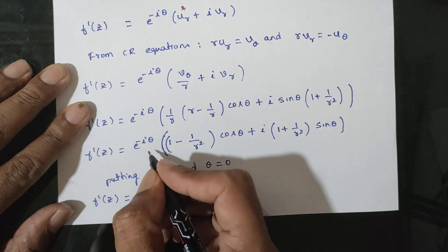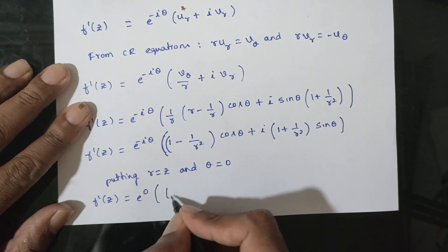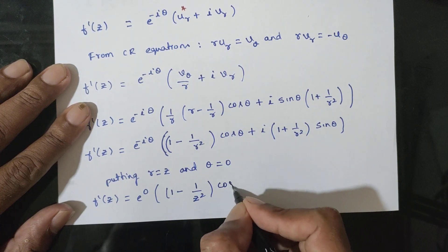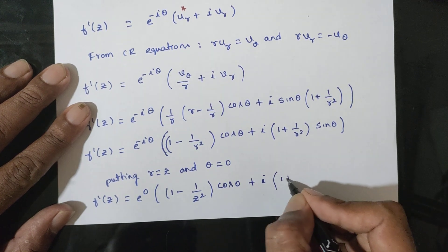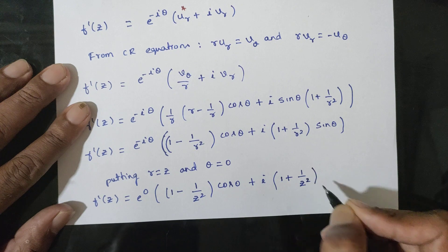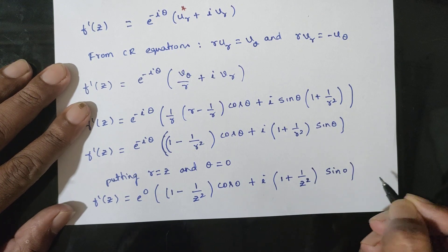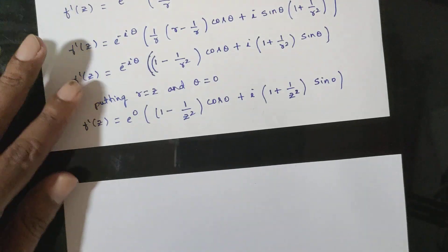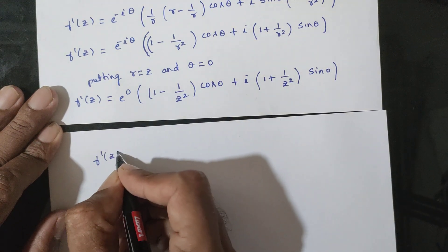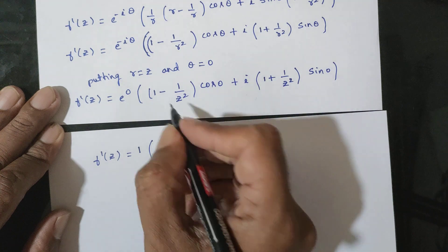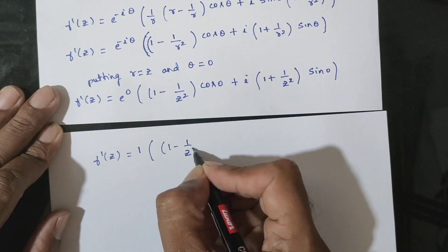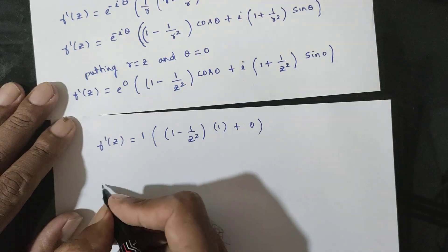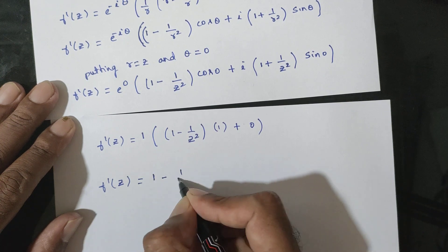At θ = 0: f'(z) = e^0 · [(1 - 1/r²)cos0 + i·(1 + 1/r²)sin0]. Since sin0 = 0 and cos0 = 1, this simplifies. Therefore f'(z) = 1 - 1/z², replacing r with z.